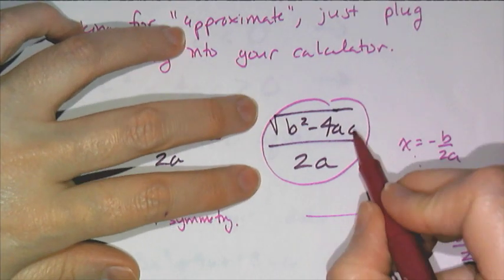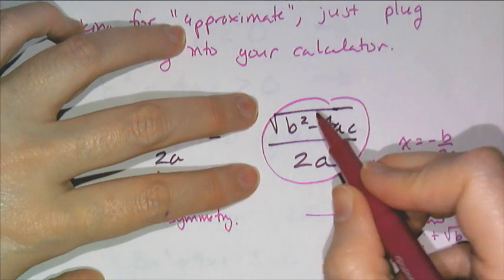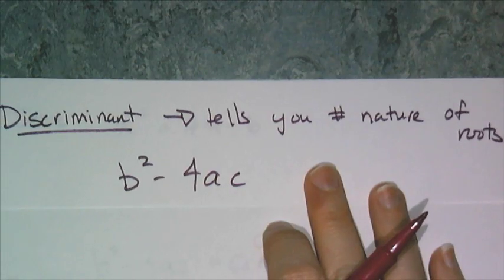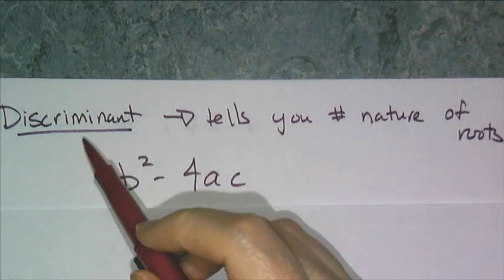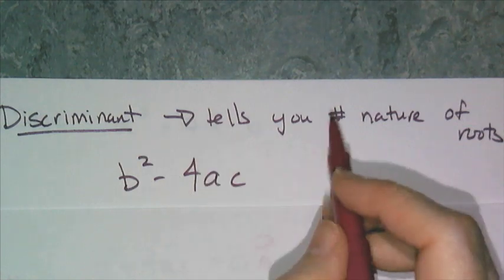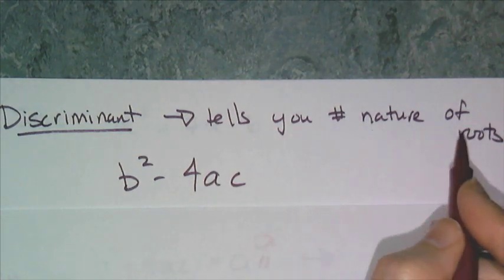So now let's look at this thing, this one half, in a little more detail. So the part under the radical, the b squared minus 4ac, is called the discriminant. And it tells you the number and the nature of the roots, meaning how many x-intercepts it has and what type of number they are.